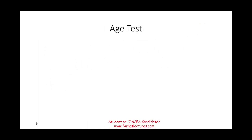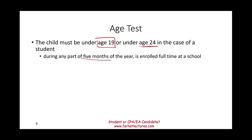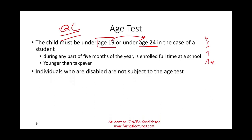The age test: the child must be under the age of 19, or under the age of 24 if they were a full-time student during any five months of the year — because each semester in the U.S. is about four to five months. They must also be younger than the taxpayer. However, individuals who are disabled are not subject to the age test; if the person you're qualifying as a qualifying child is considered disabled, you disregard the age test entirely.